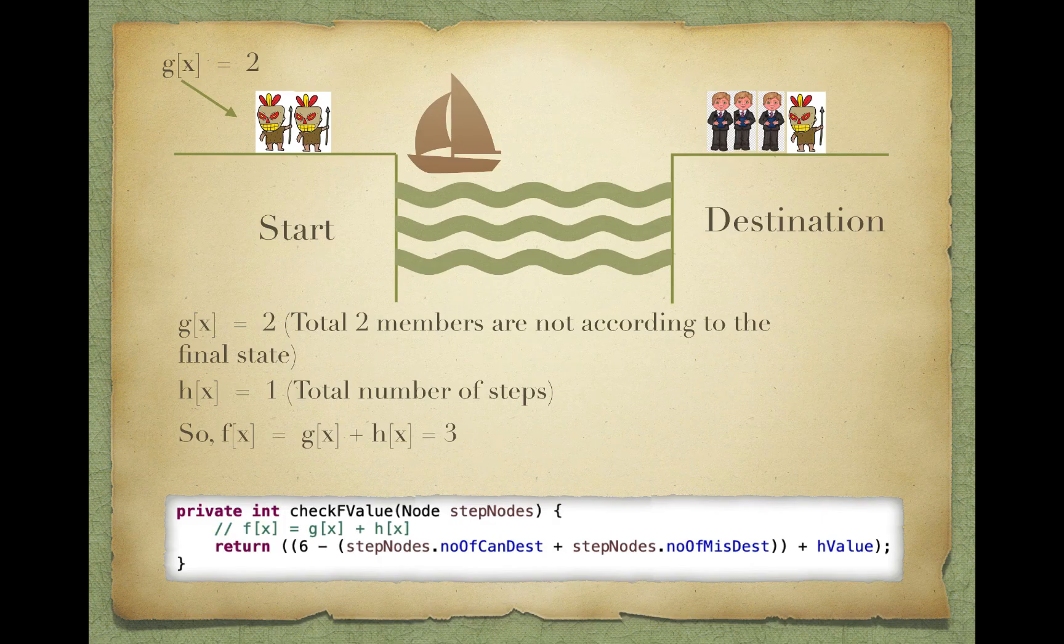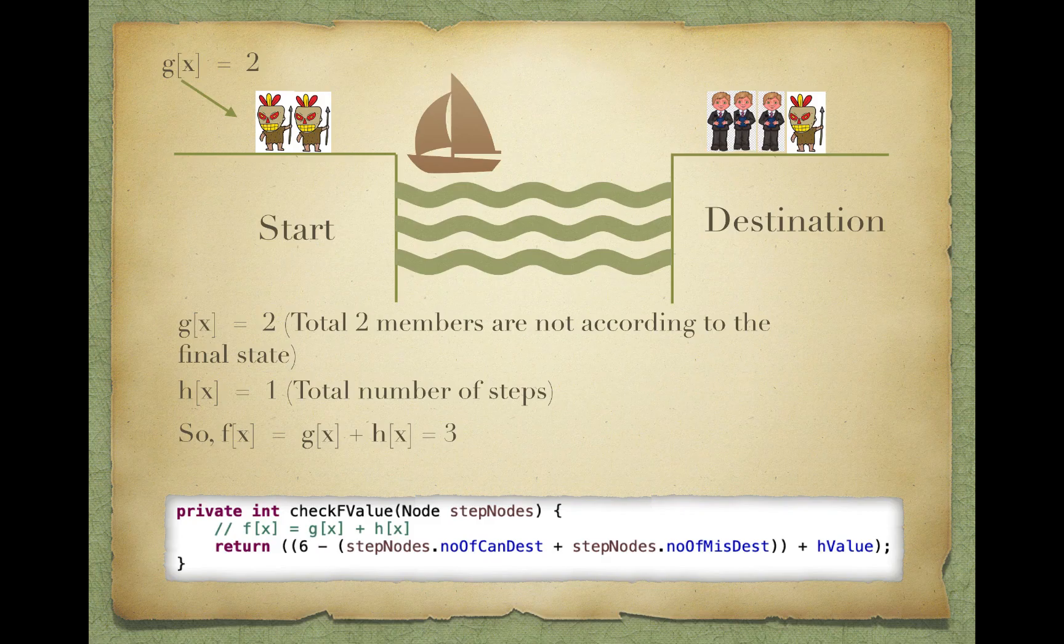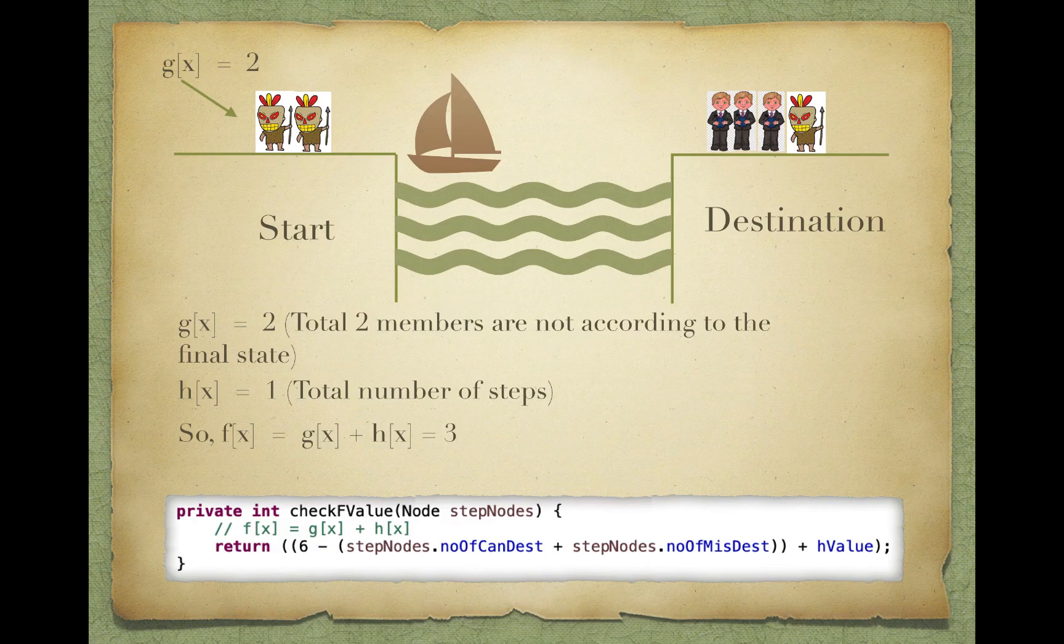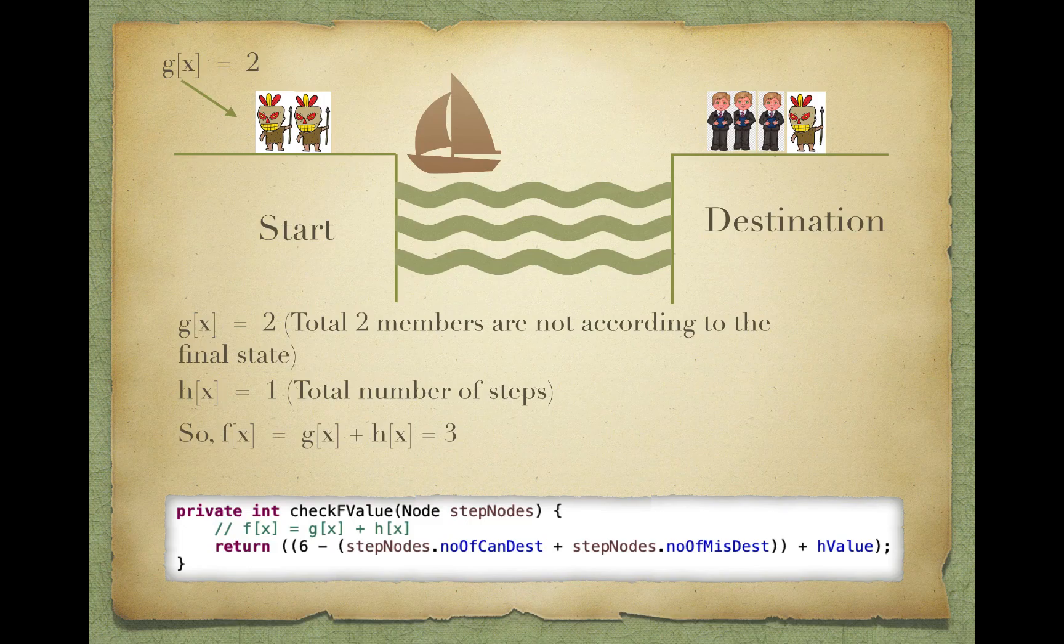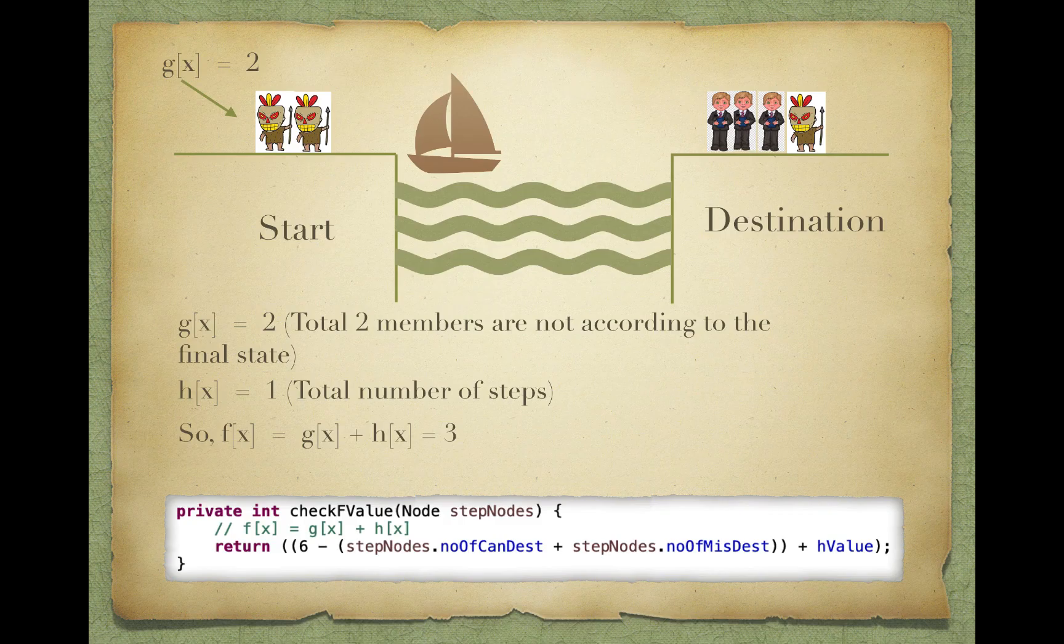Here we have h(x) equals 1. I will consider it as total steps from the beginning. Since this is the first step, I will choose h(x) equals 1. If I do more operations like transferring three missionaries from destination to start, h(x) will increment accordingly. We are going to see this entire formula when we check out the code.